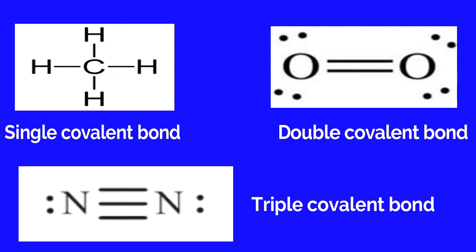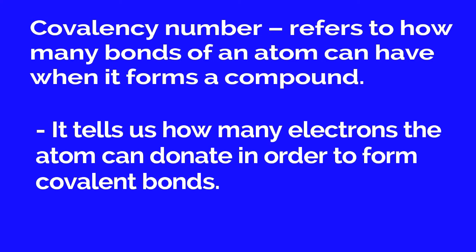But let us consider the covalency number in order to determine how many bonds an atom can have when it forms a compound. When we say covalency number, it refers to how many bonds an atom can have when it forms a compound. It tells us how many electrons the atom can donate in order to form covalent bonds.